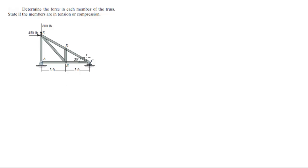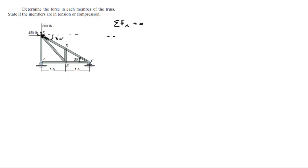Let's look at joint E. We have a force going down and a force going to the right. Therefore, this force Ed has to be going this way. This angle is 30 degrees given right here. So, you know that the sum of the forces in the X-direction, Edx, are equal to 0.